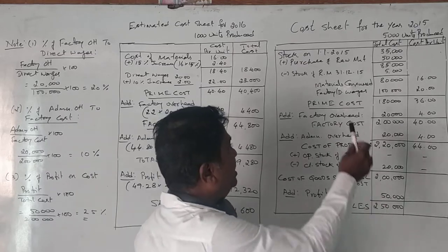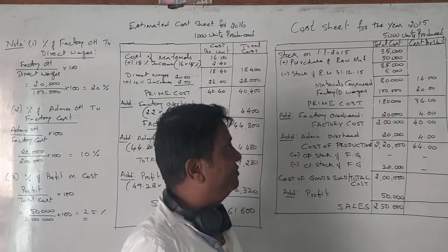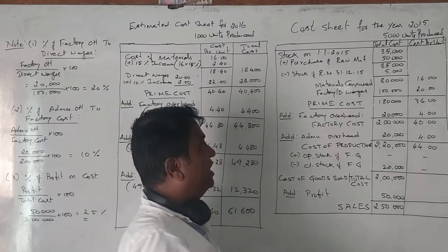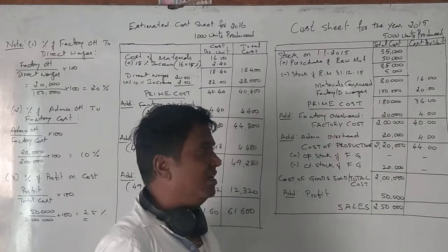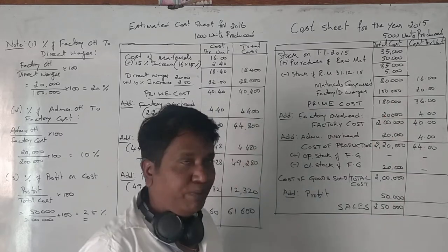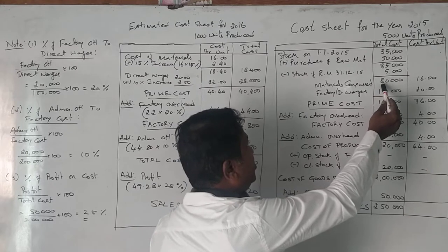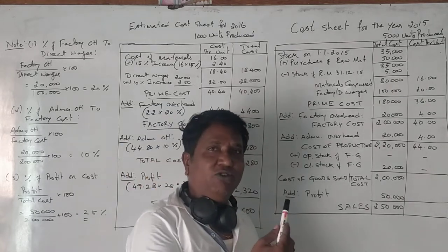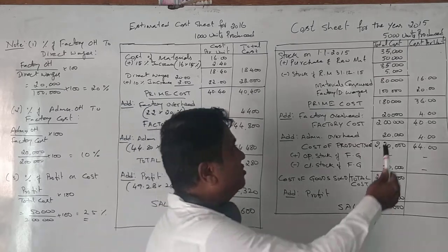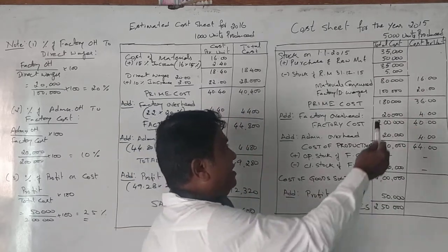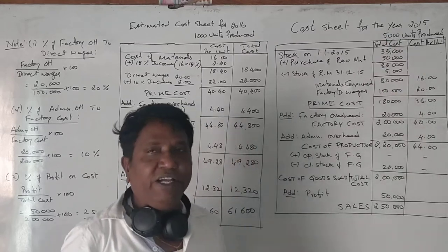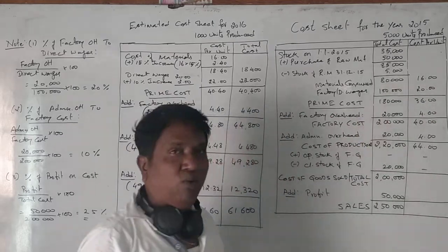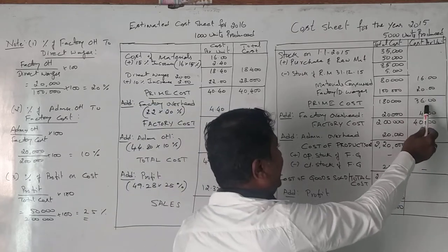Wages is given as 1,00,000 rupees. So material consumed is 80,000 and wages is 1,00,000 — adding these gives a prime cost of 1,80,000. Per unit: 80,000 divided by 5,000 is 16 rupees per unit for material, and 1,00,000 divided by 5,000 is 20 rupees per unit for wages. So prime cost per unit is 16 plus 20 equals 36 rupees.